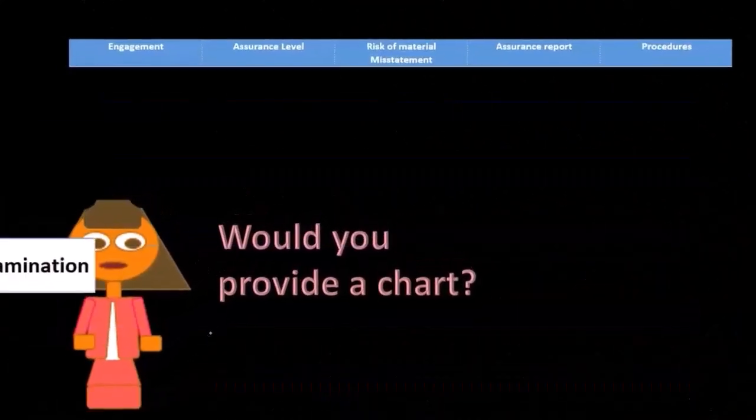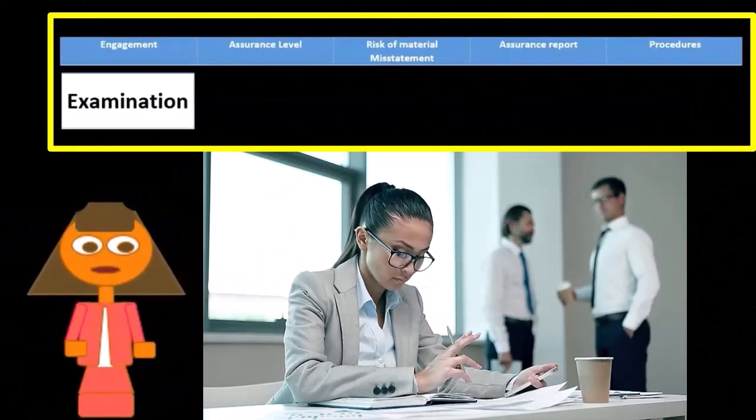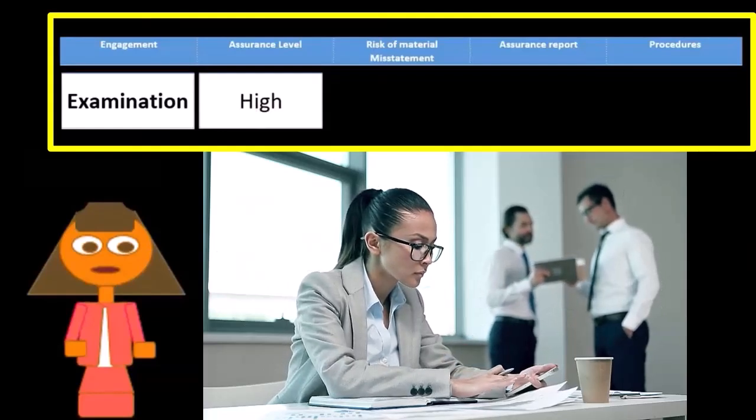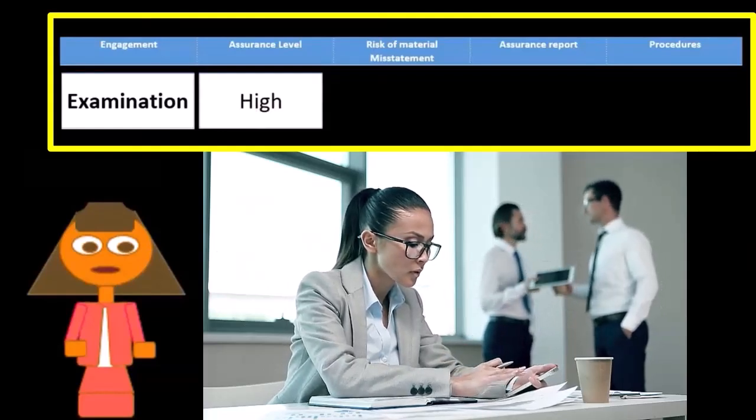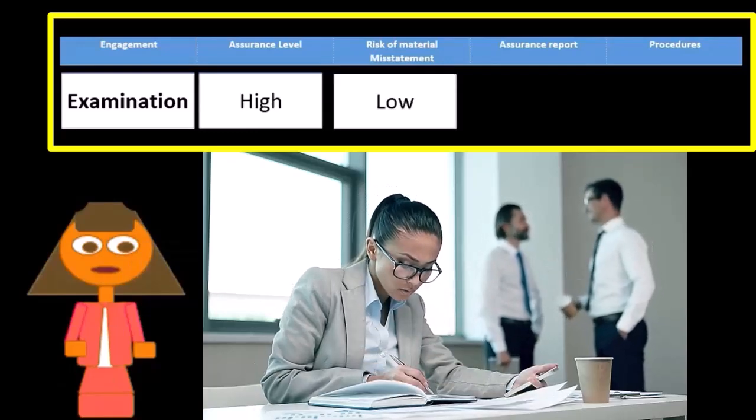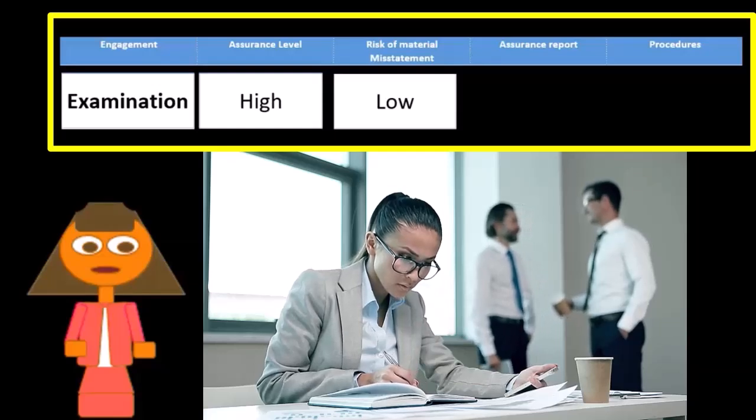Let's take a look at a chart here. If we had an examination, the assurance level is high, so we're giving high assurance that the financial statements we're talking about in an audit are correct. That means that the risk of a material misstatement is low.